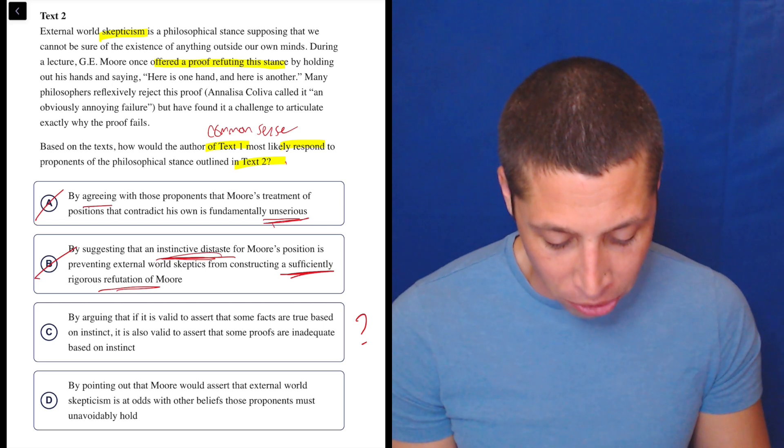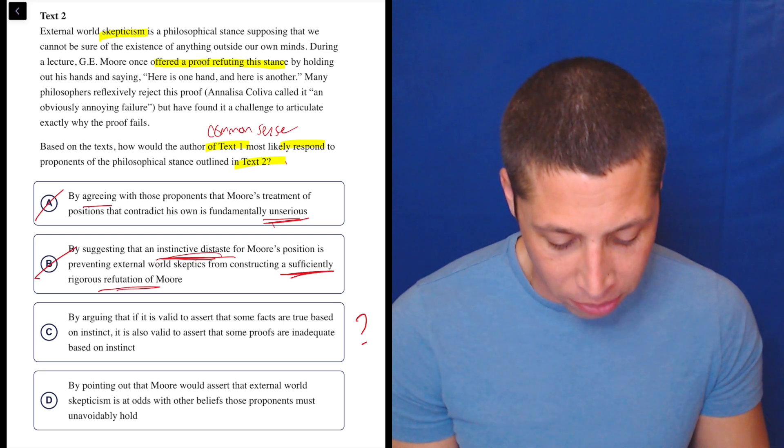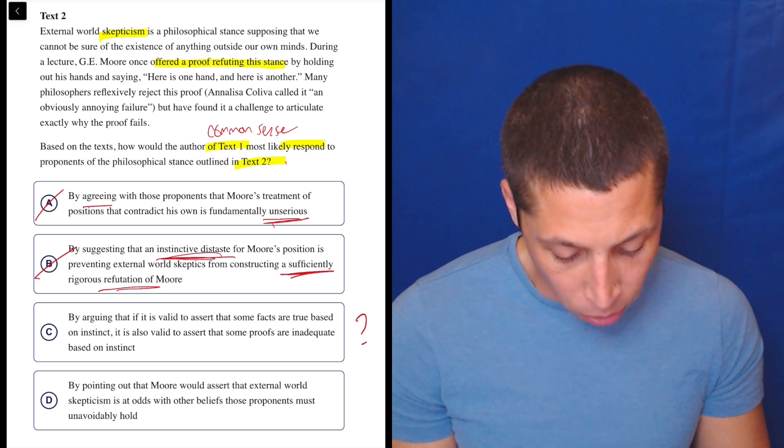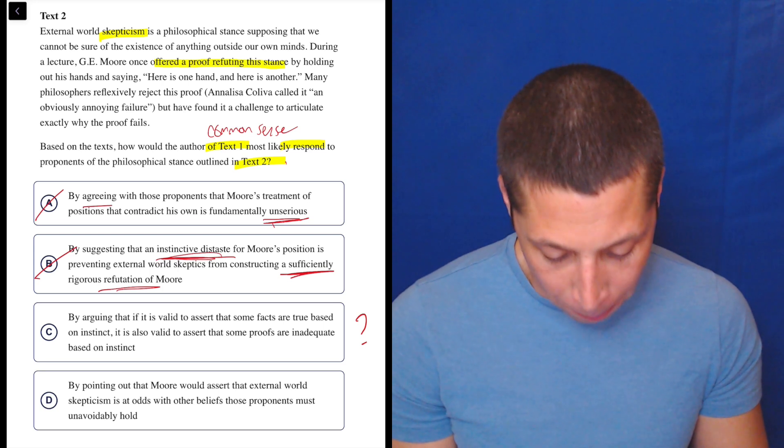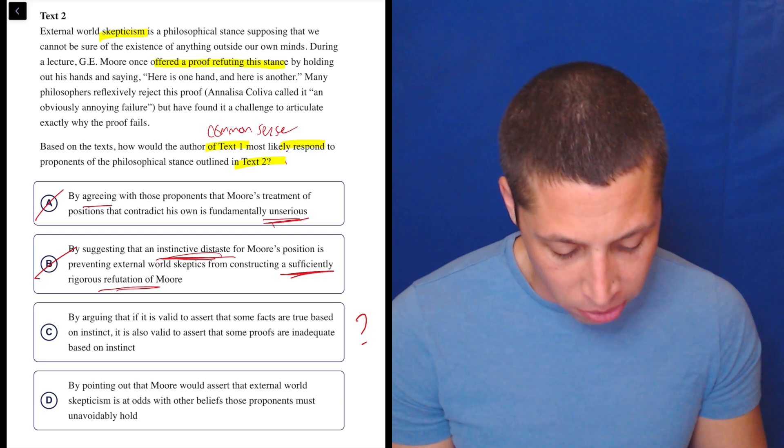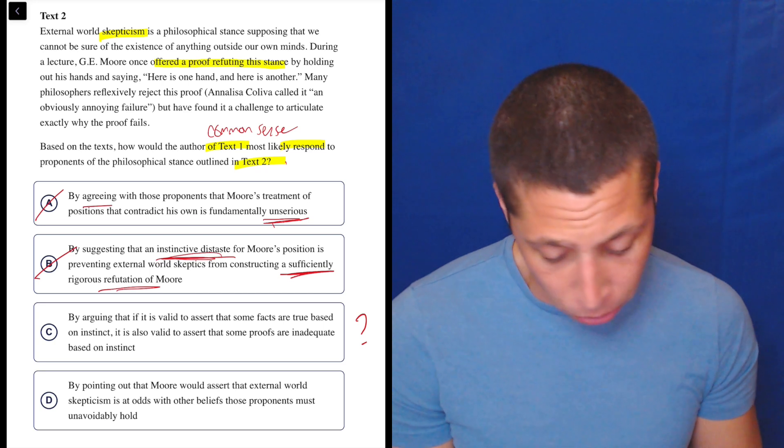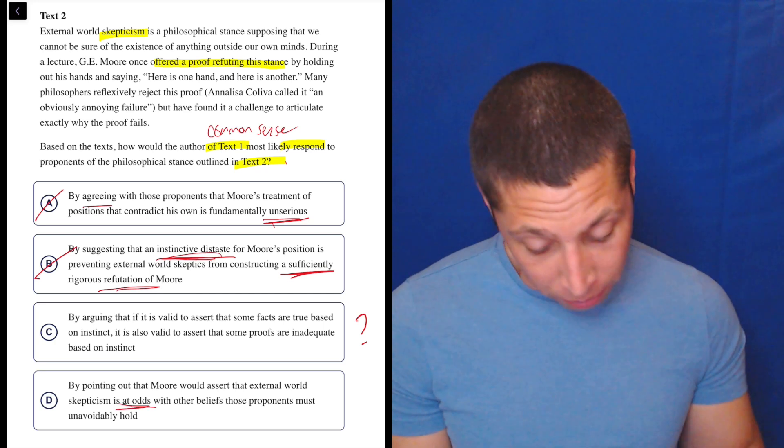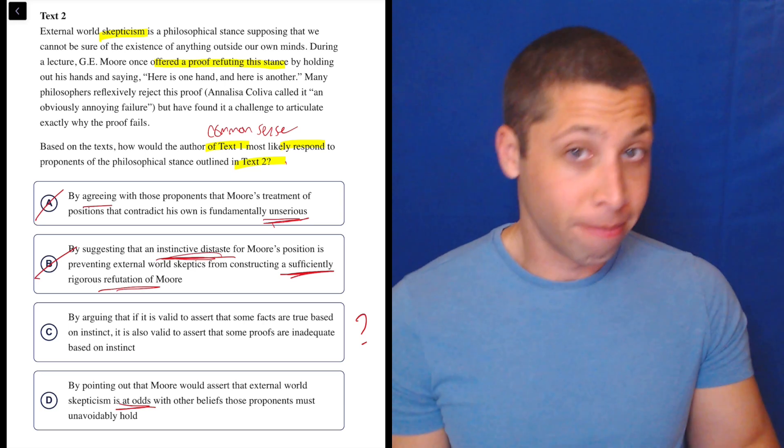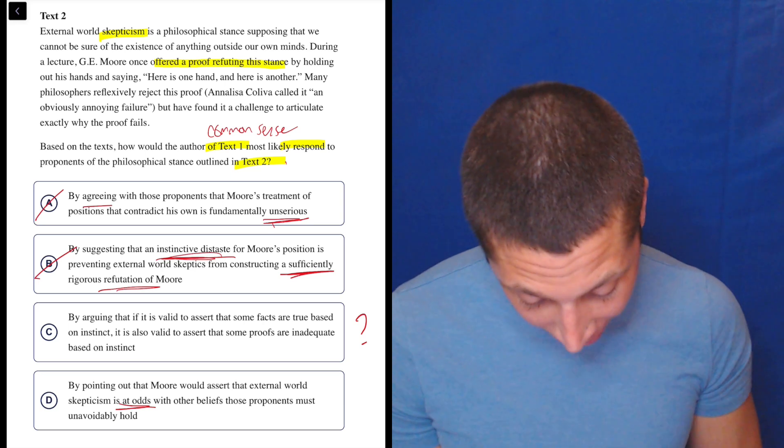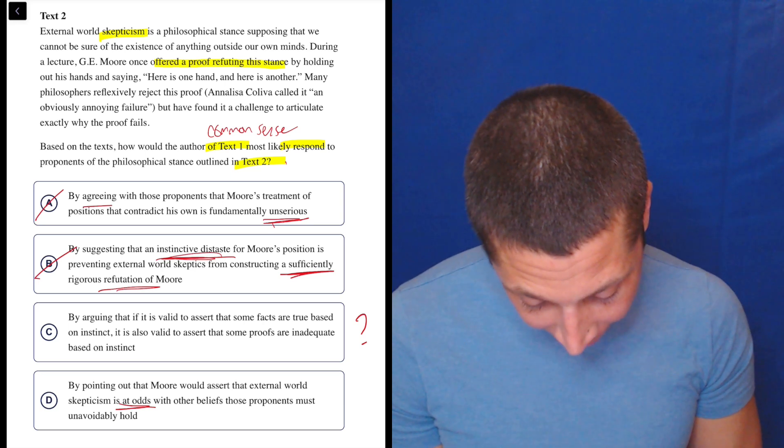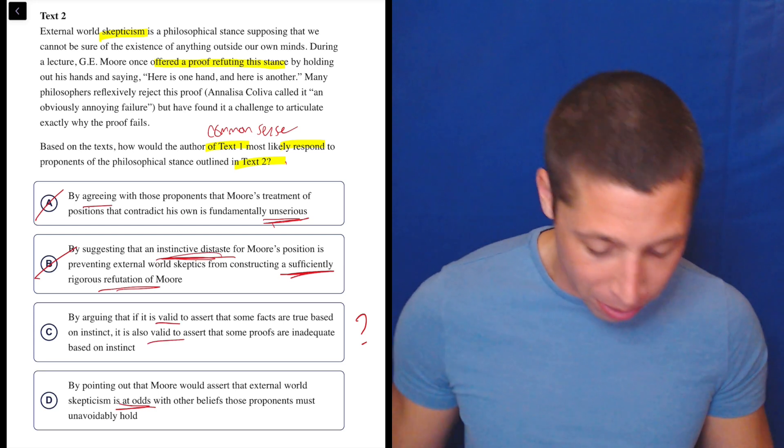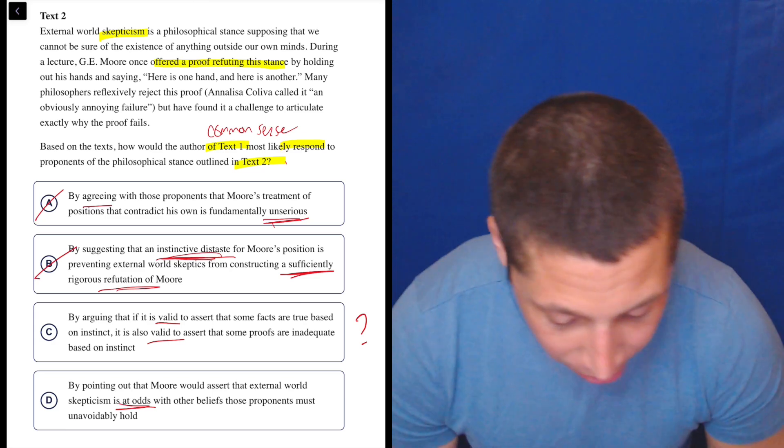Let's see what D says. By pointing out that Moore would assert that external world skepticism is at odds with other beliefs those proponents must unavoidably hold. Okay, Moore would assert that external world skepticism is at odds with other beliefs those proponents must unavoidably hold. I love that it says at odds, right?